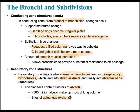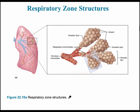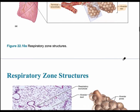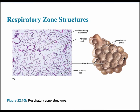Because gas exchange occurs in the alveoli, the structure of the alveolar wall is simple squamous epithelium. The next slide shows the respiratory zone structures. The terminal bronchiole is the last part of the conducting zone, the respiratory bronchiole is the first part of the respiratory zone, leading into the alveolar duct. We'll now look more in depth at the alveolar sac.